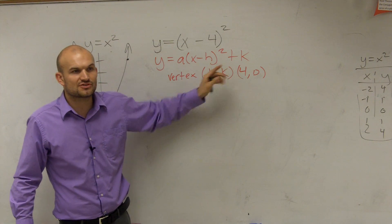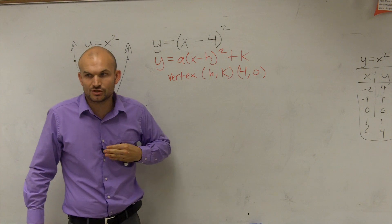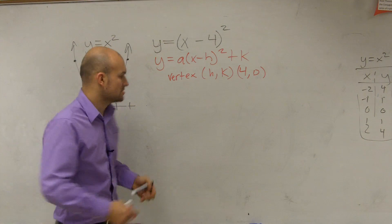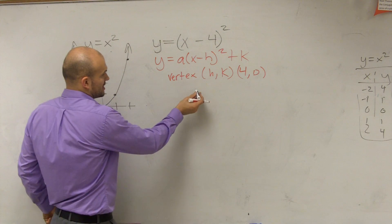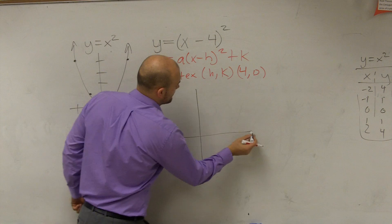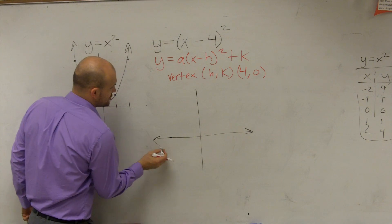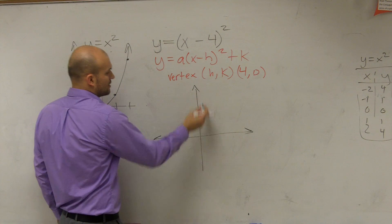So if I say my vertex is 4, 0, that's shifting the graph to the right. So let's go ahead and graph what the parent graph looks like, and then see what's going to happen. Because h shifts the graph horizontally.